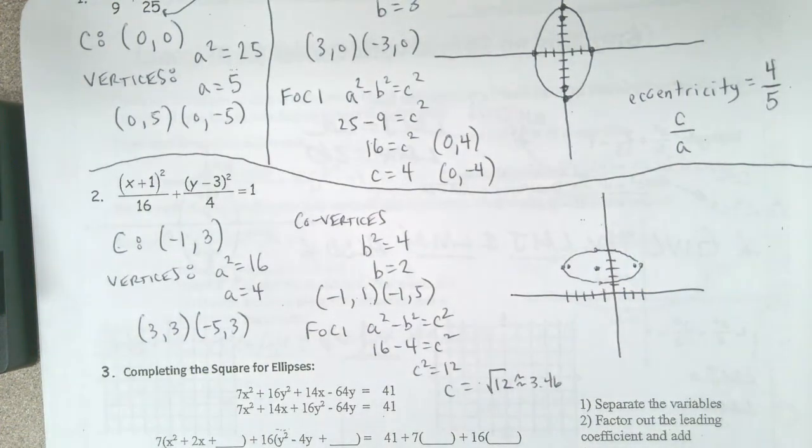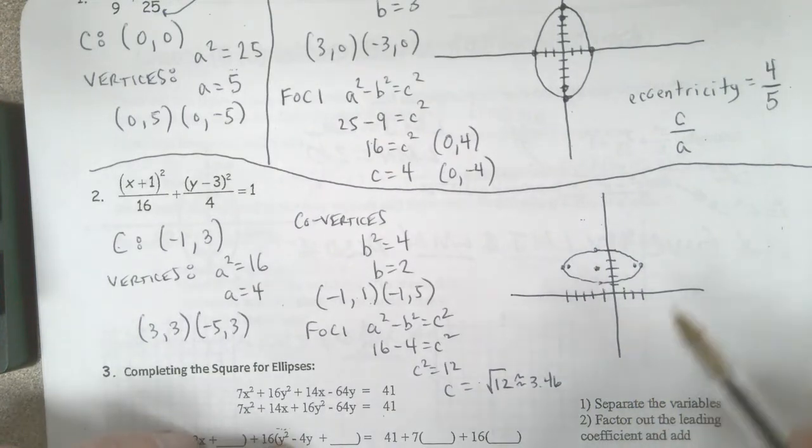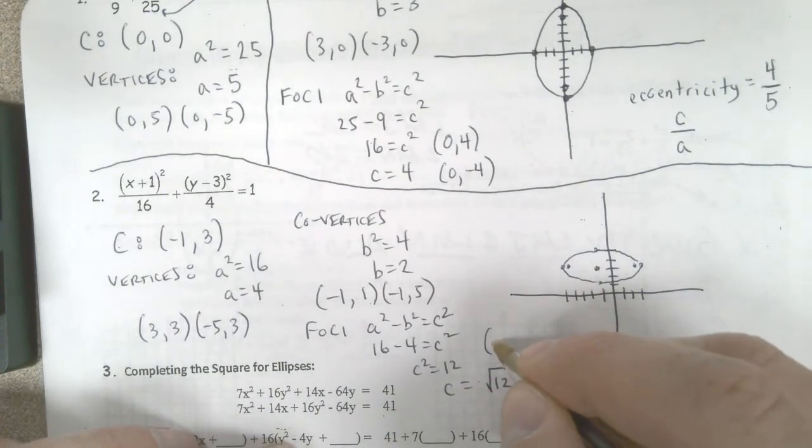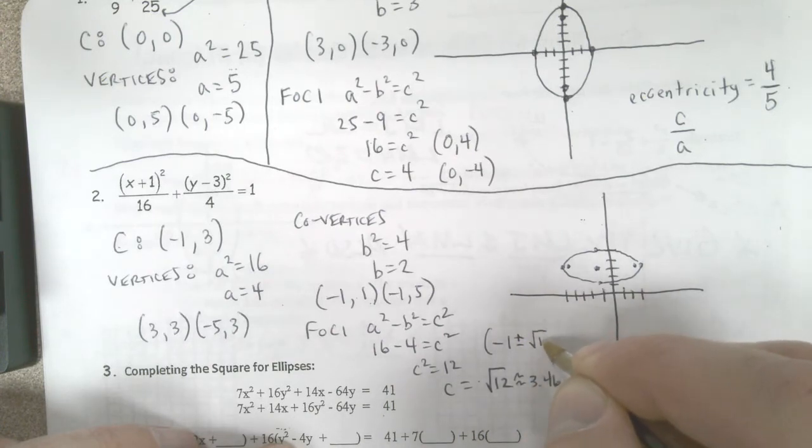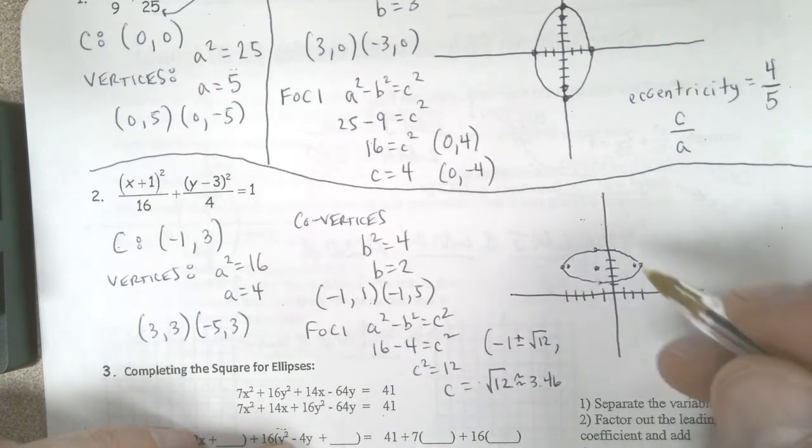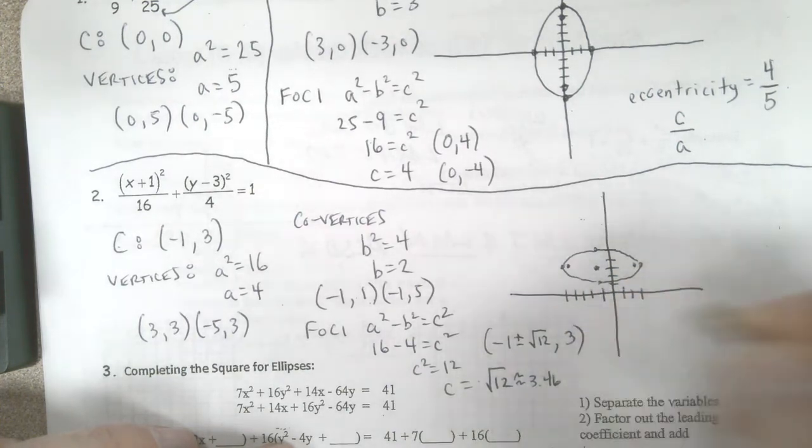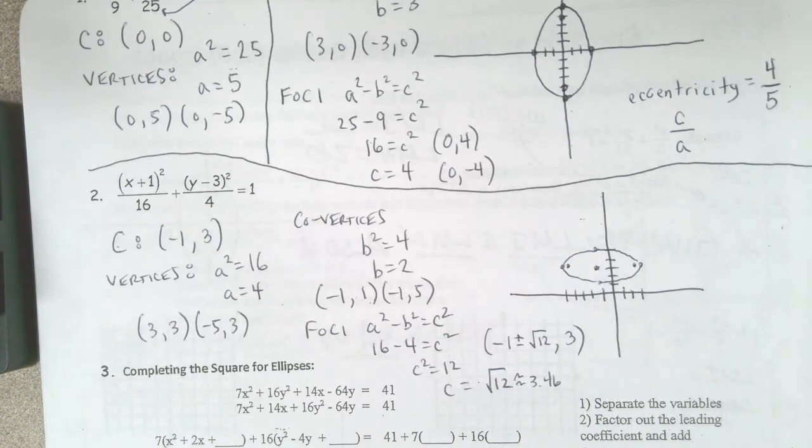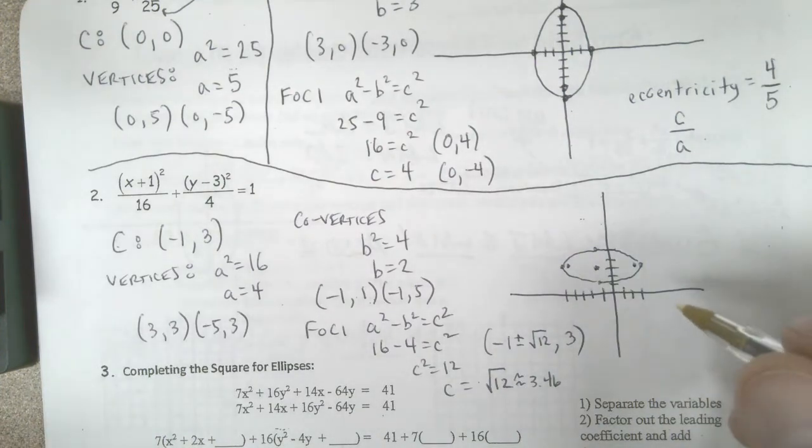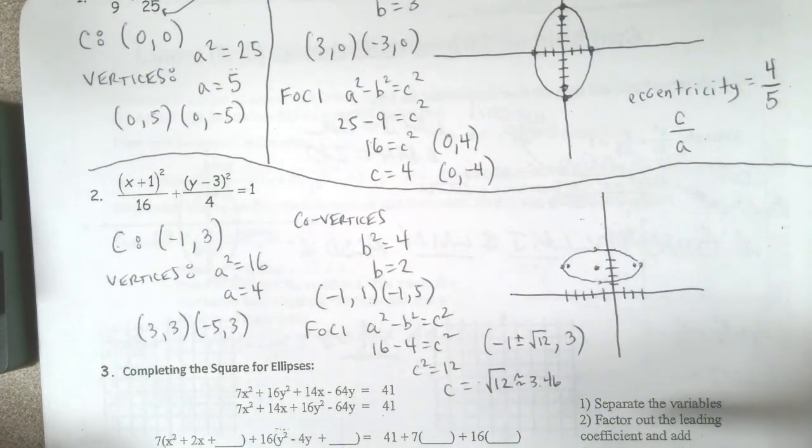Now those points for my foci, just so that I'm listing the exact value, my x value is going to be negative 1 plus or minus radical 12. And we know that the y value is 3. So that would be the easiest way to write your foci points.